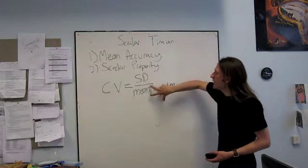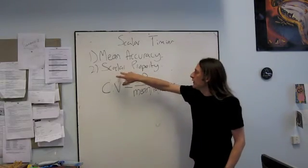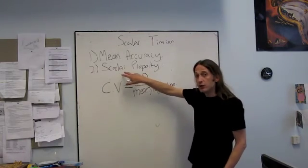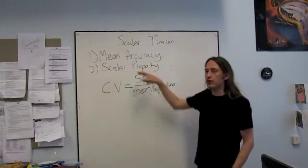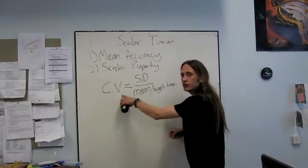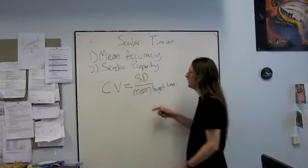So if you imagine, if this is true, if it's true that our variability is a constant fraction of the mean, okay, so if I double the duration, I double the standard deviation, then this should always give me a constant number here.